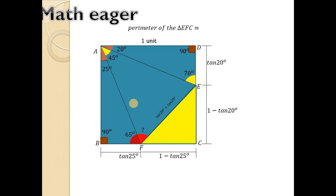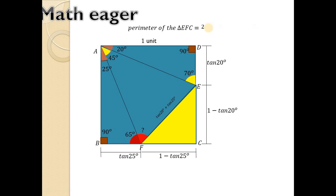Now the perimeter of triangle EFC is EF plus EC plus CF. Here FE is tan20° plus tan25°, EC is 1 minus tan20°, and CF is 1 minus tan25°. Substituting, the tan20° terms and the tan25° terms cancel, and the remaining value is 2. So the perimeter of triangle EFC is 2.